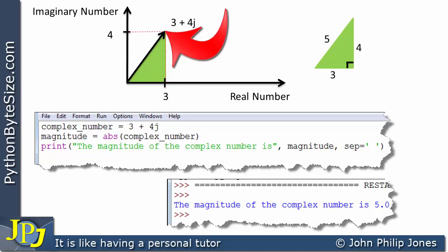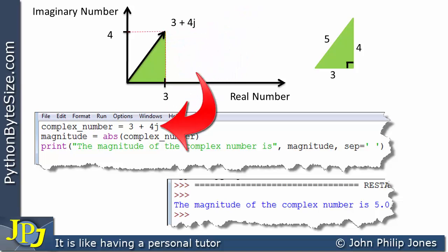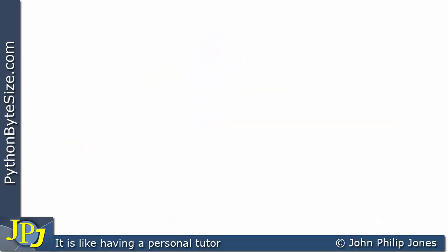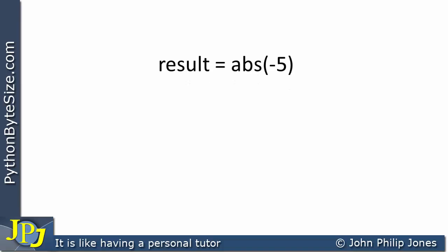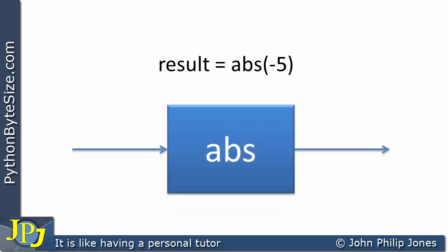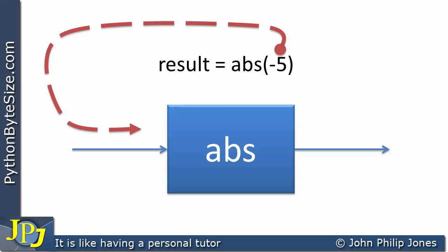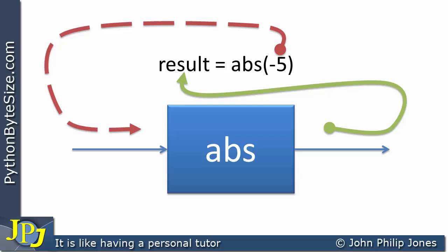That is referred to as the magnitude of this particular complex number. Let's have a look at some examples in isolation. Here we have: result is assigned the absolute value of minus 5, where minus 5 is of type integer. Mapping this onto the absolute function diagram, we're passing minus 5 in and getting an output stored in result, which is going to be 5.